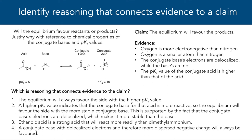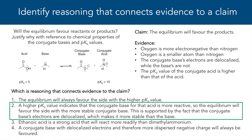Option 1 is not quite right — we need to connect the evidence and claim with reasoning based in scientific principles; in this case, we're simply stating a memorized rule about pKa values. Option 3 is not quite right either — though ethanoic acid is a stronger acid than dimethyl ammonium, this statement does not tell us why the evidence supports the claim. Option 4 is also not quite right — we're simply stating a memorized rule about localization that isn't always true. Option 2 is correct: we've connected the pKa evidence to the claim using what we know about delocalization and stability.